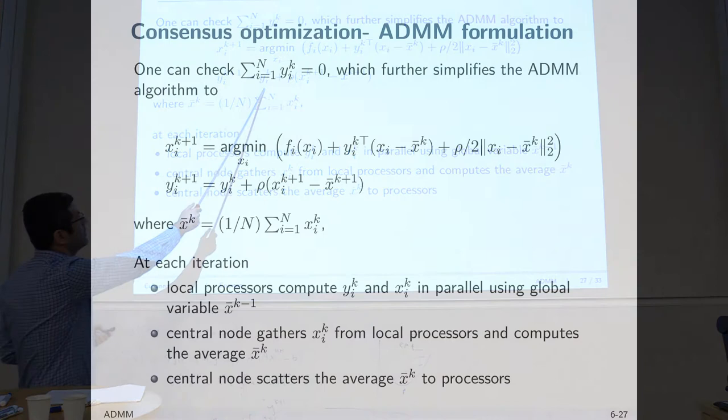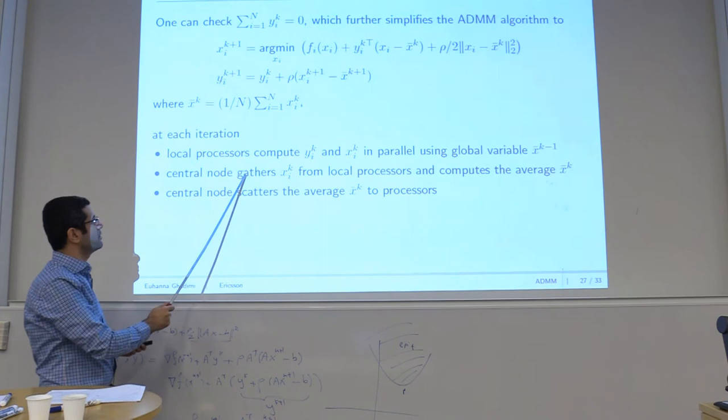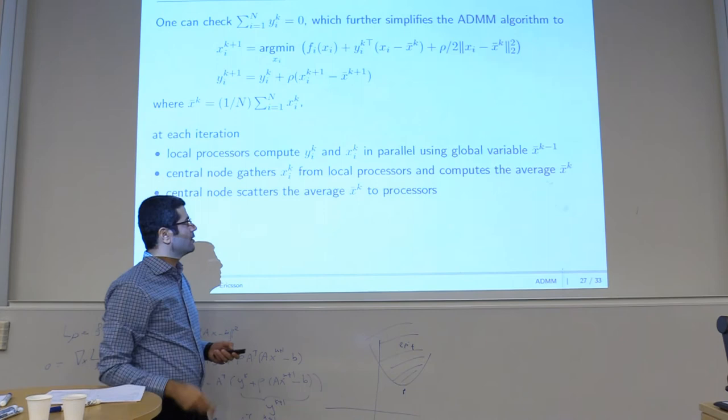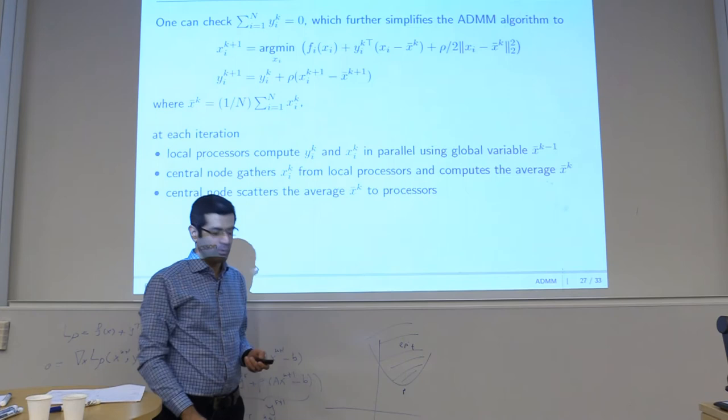So this is how it works. At step X_i K plus 1, you calculate this and Y_i and X_i because Y is also splitted to the nodes. And then you do this updating in parallel but you use the global variable, the consensus variable. That is in the nodes and then in the master node the central node gathers all the X_i's and only X_i's from the processors and computes the average and distributed back, scatters back to the old nodes. So it's exactly like a MapReduce architecture.